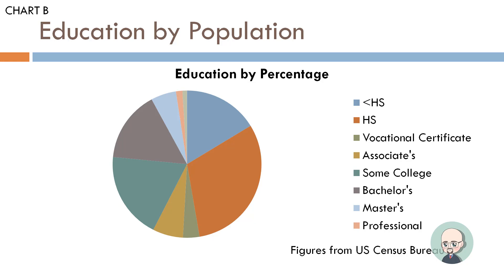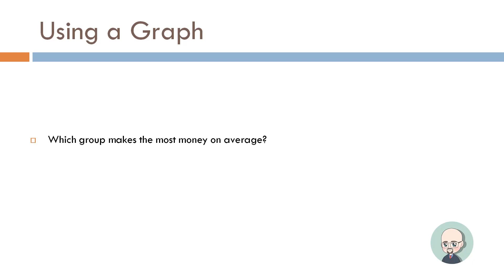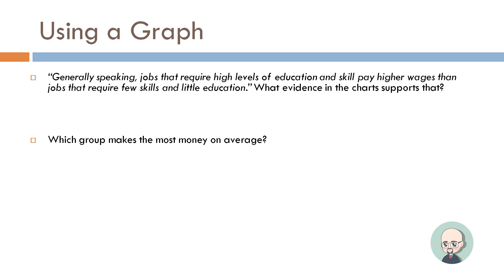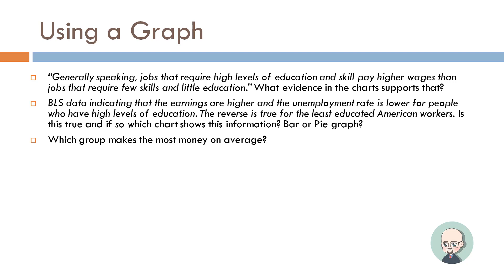When we use a graph, we're going to ask — based on those questions with charts from the handout — which group makes the most money on average? By group I mean both ethnic group and education level. The article states that generally jobs requiring higher education and skill pay higher wages — what evidence in the chart supports that? The BLS data indicates earnings are higher and unemployment is lower for people with high levels of education. Is this true, and if so, which chart shows this — Chart A or Chart B?